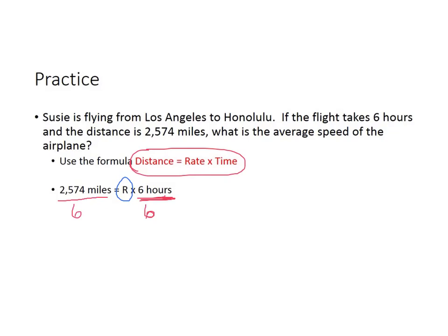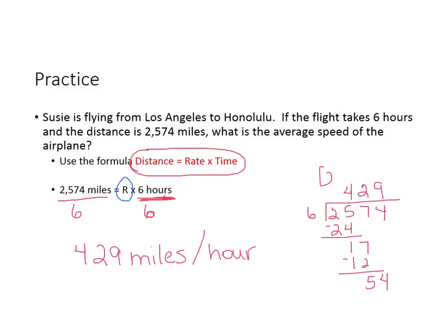So to solve this, we're gonna have to take 2,574 and divide that by six. Now six goes into 25, four times is 24. Subtract, you get 17. 17 divided by six is 2, which is 12. 17 minus 12 is 5. Bring down the 4. Six goes into 54 nine times. So the rate is 429 miles per hour. Make sure you write all this down before you go on.